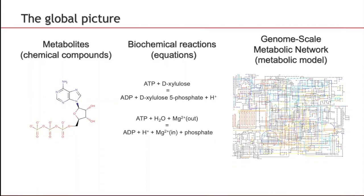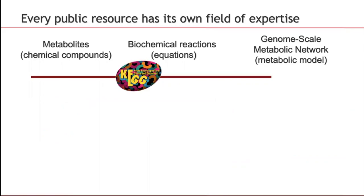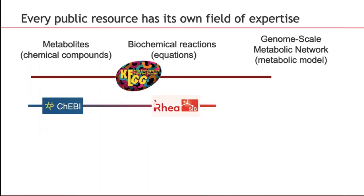Different databases have attempted to capture and describe this world. Certainly the most famous of them is the Kyoto Encyclopedia of Genes and Genomes. More recently, over-specialized databases have appeared to document in more detail the metabolite level — for example ChEBI — or the biochemical reaction — for example Rhea. These two databases are developed in sync with one another, but ChEBI and Rhea do not cover the genome-scale part of the problem.